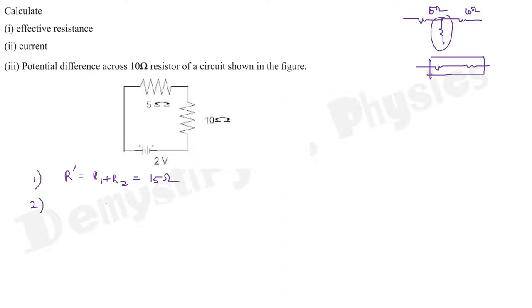Effective resistance means you remove the 5 and 10 ohm resistors and replace them with one 15 ohm resistance. Adding 5 and 10 to get effective 15 will give you the same value of current.